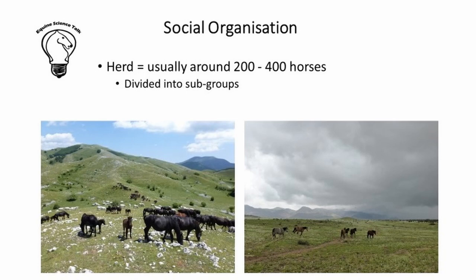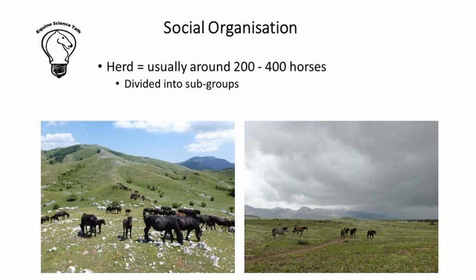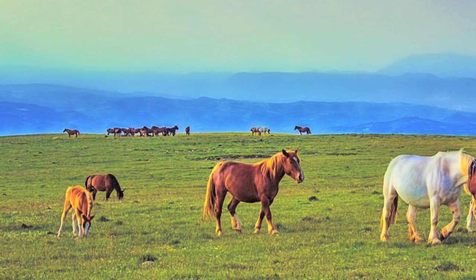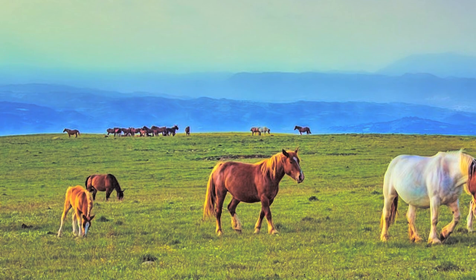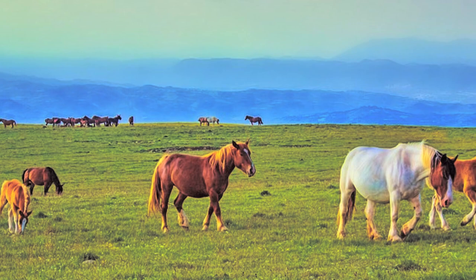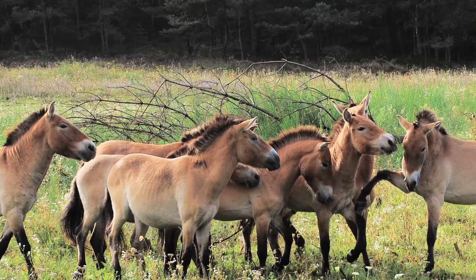Let's start with the social organization. In the natural environment, horses usually live in large herds of around 200 to 400 individuals. However, they are not all connected to each other, but rather divided into smaller groups. The herd simply means that these groups share a common territory and sometimes exchange group members. Among the groups we distinguish between so-called harems and bachelor bands. A harem consists of between one and five stallions with their mares and foals.